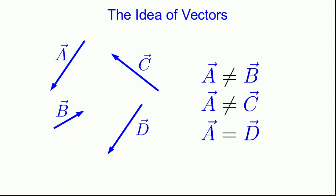On the other hand, this vector, D, is equal to A. They have the same magnitude, and they point in the same direction. The fact that I've drawn them in different places doesn't matter. You can move a vector around as long as you don't change which way it's pointing or its size, and the vector doesn't change.